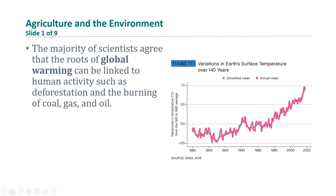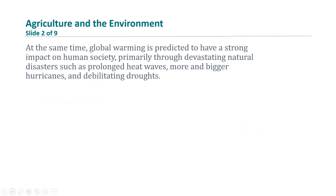Most scientists agree that the roots of global warming can be linked to human activities such as deforestation and the burning of coal, gas, and oil. Figure 17.1 on our screen shows the variation in the Earth's surface temperature over the last 140 years. We can see that the smoothed mean and the annual mean have drastically increased, showing that the Earth's surface temperature over the last 140 years has increased dramatically. At the same time, global warming is predicted to have a strong impact on human society, primarily through devastating natural disasters such as prolonged heat waves, more and bigger hurricanes, and debilitating droughts. In other words, humans are impacting their natural environment, and the environment is impacting humans as well.